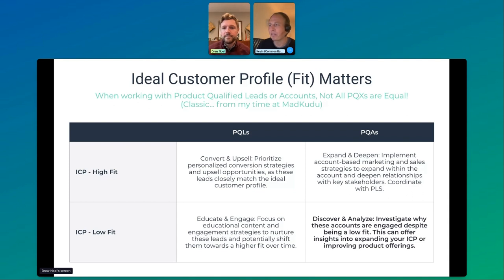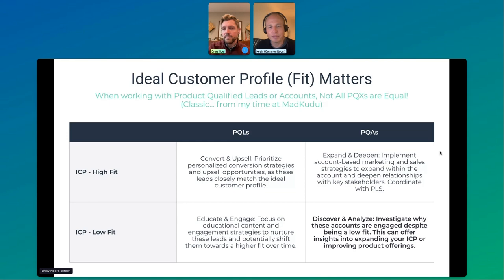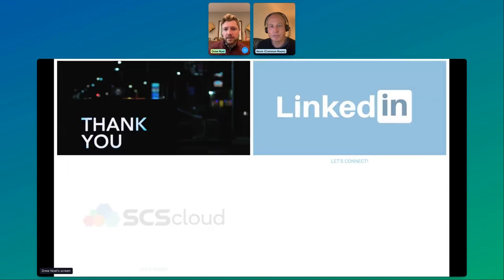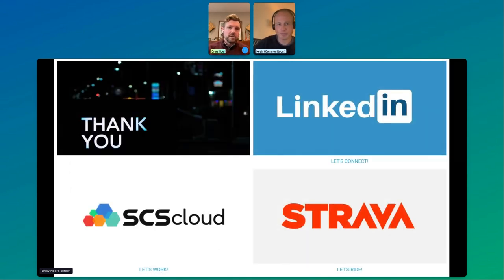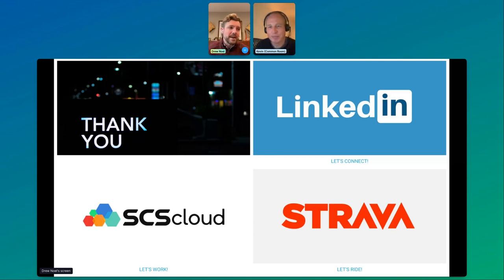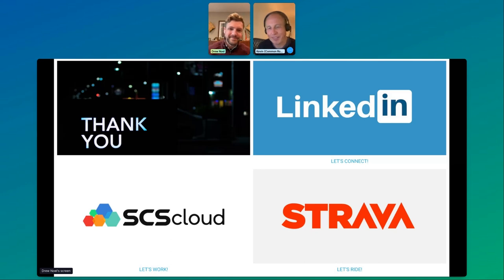If you see low fit in terms of ICP combined with high qualification in terms of intent, that's something you want to surface to your product team. Dig deeper on how those particular organizations or individuals are using the product, as you may have a completely different adjacent or undiscovered ICP. It opens up the door to pull that whole cycle all over again. Thank you — happy to take questions. Connect with me on LinkedIn and Strava.